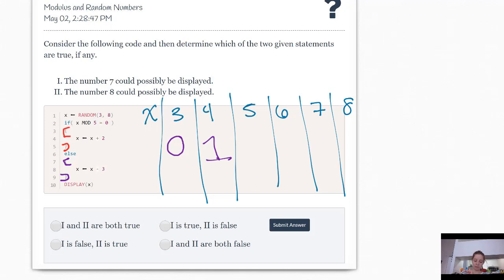Now what if the random number was 5? What if X was set to 5? So if 5 mod 5 is 0, 5 divided by 5 has a remainder of 0. Therefore, we're going to go in this if statement and do line 4. X is set to X plus 2. So X would be set to 7. And we would display 7. We would skip the else.